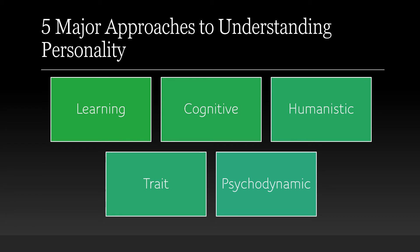There are five major approaches to understanding personality. We can think about who we are through the lens of learning — what role has learning played? Have you experienced reinforcement for certain traits, or were certain behavioral traits punished? Think about classical conditioning, a type of associative learning — how has that affected some of your traits and characteristics?